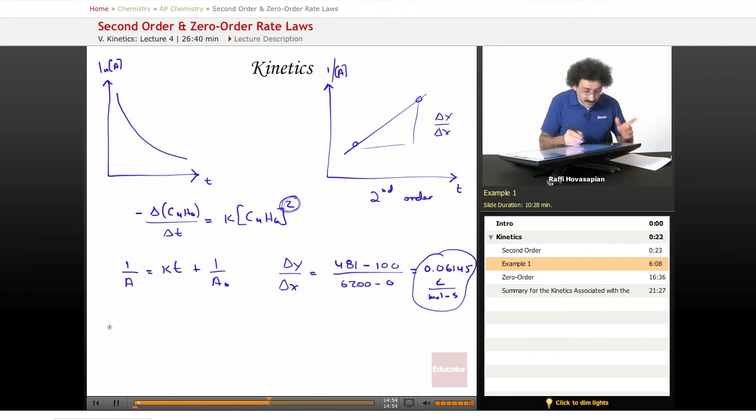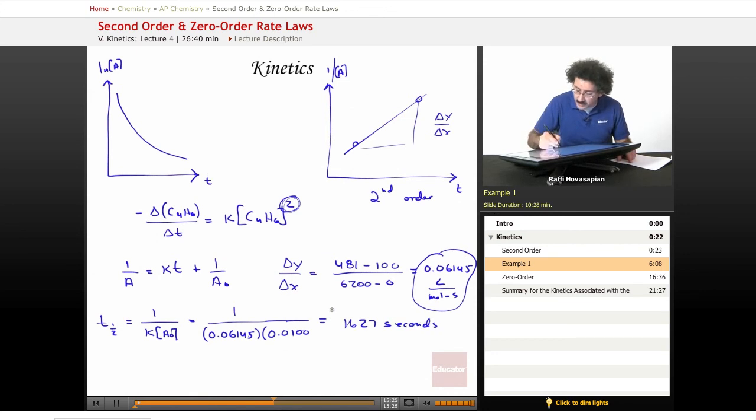And now we want to find T one-half. Well, T one-half of a second-order reaction is 1 over K times the initial concentration. It's equal to 1 over 0.06145, and the initial concentration was 0.0100. So when we do that, we get 1,627 seconds.